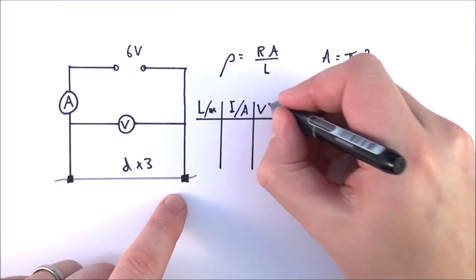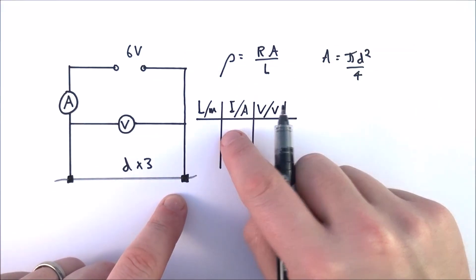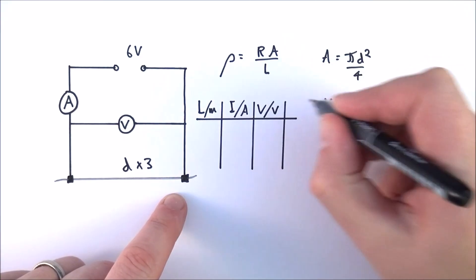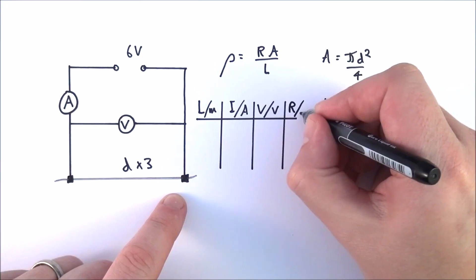You can use these two things together, remembering that V over I is equal to R, to work out the resistance of that piece of wire in ohms.